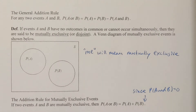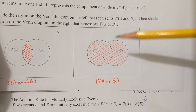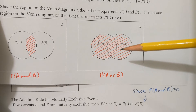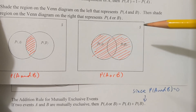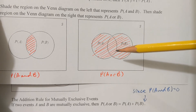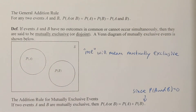From that, we have the general addition rule, which we've seen before back in chapter 2. For any two events A and B, the probability of A or B is equal to the probability of A plus the probability of B minus the probability of A and B. If you take the probability of A plus the probability of B, you would have counted the overlap twice. So we subtract one instance of the overlap so it's only counted once.